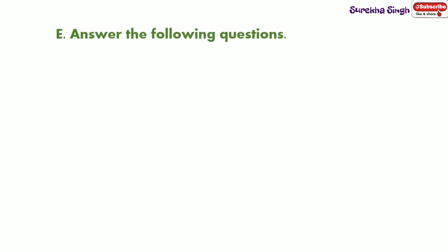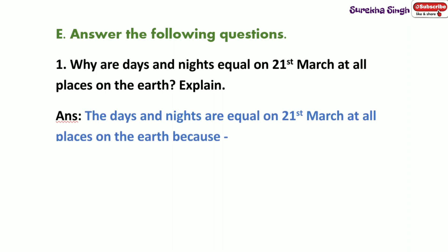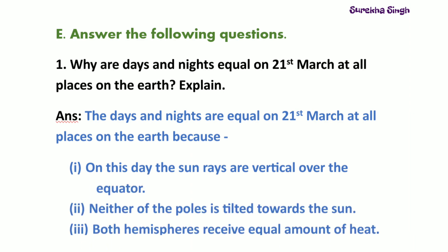Question E: Answer the following questions. Question 1: Why are days and nights equal on 21st March at all the places on the earth? Because on this day sun rays are vertical over the equator. Neither of the poles is tilted towards the sun. Both hemispheres receive equal amount of heat.